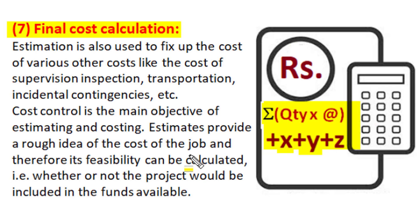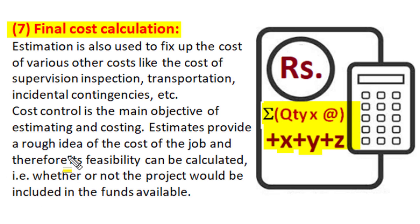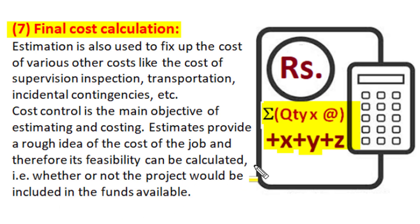The summation of all these components gives the final cost calculation of the entire project. With this calculation, estimation provides an idea about the entire cost of the job, and one can calculate the feasibility of that project execution. Top management can then decide whether the electrical installation project would be included in the organization's list according to the availability of funds, giving a clear picture of the business viability of any project.